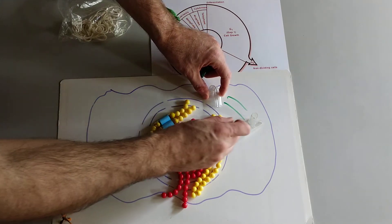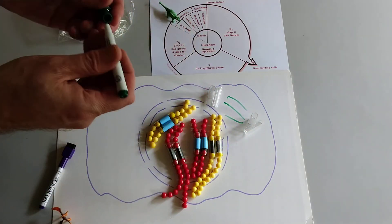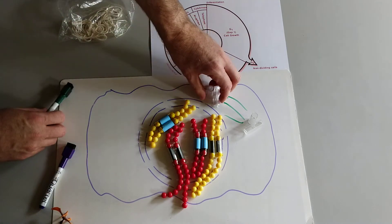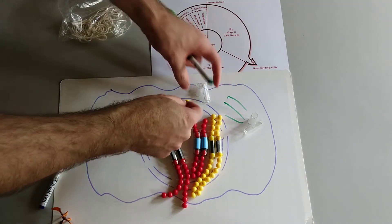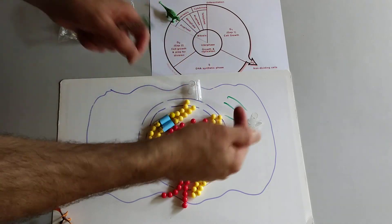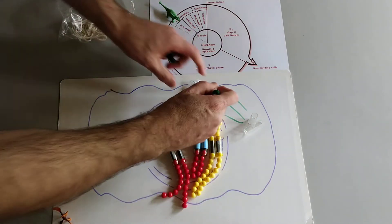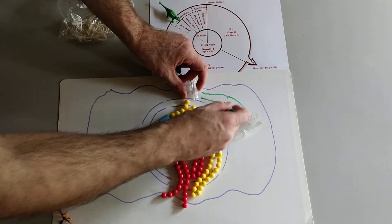I'm going to use this green pen to indicate the spindle. And the centrosomes, which are kind of the opposite poles of the spindle, start to move in opposite directions.